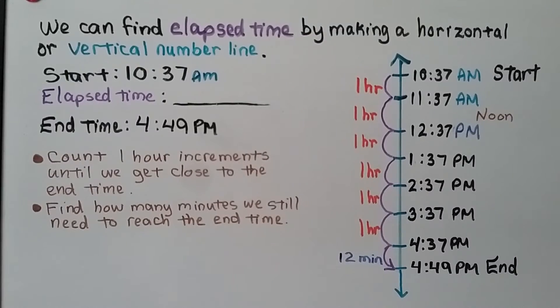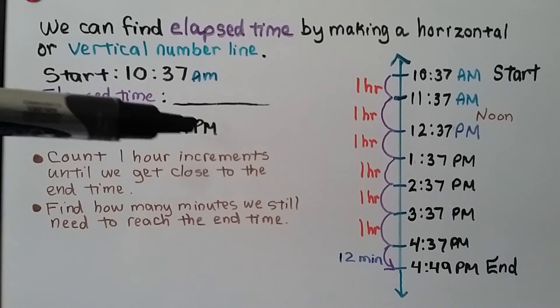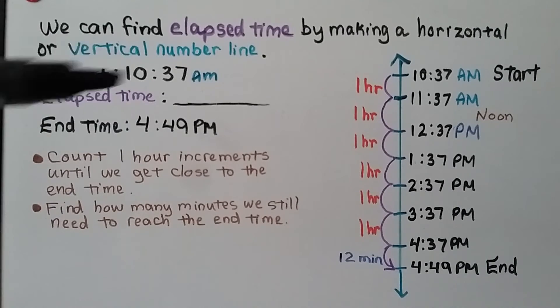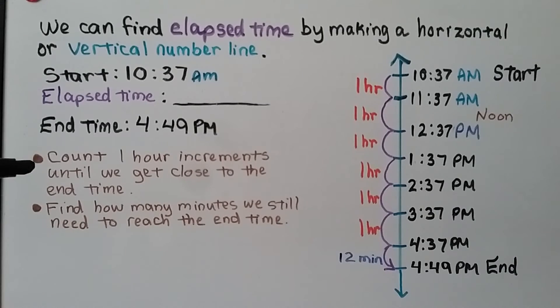We can find elapsed time by making a horizontal or vertical number line. Our start time is 10:37 AM. We do not know the elapsed time, but we know the end time. So because we have to go from AM to PM and it looks like there's a big difference, we're going to count one hour increments until we get close to the end time.